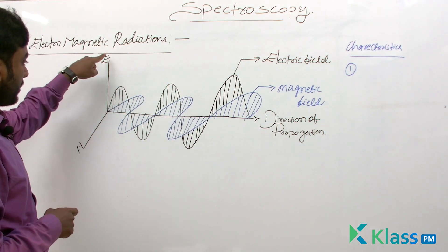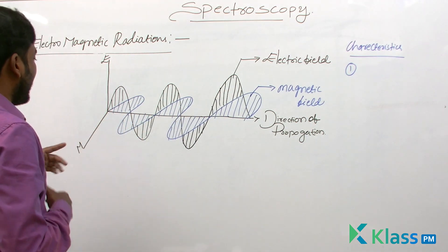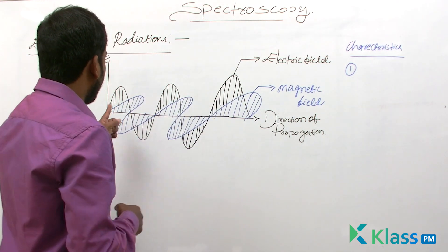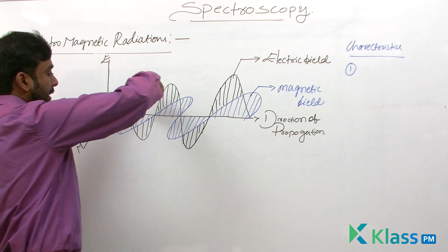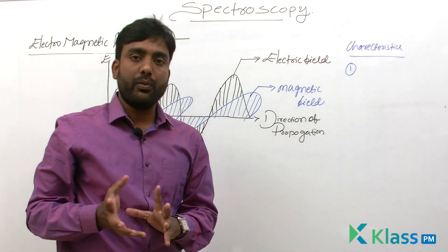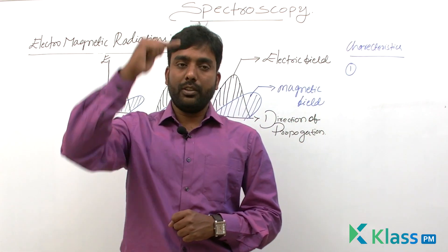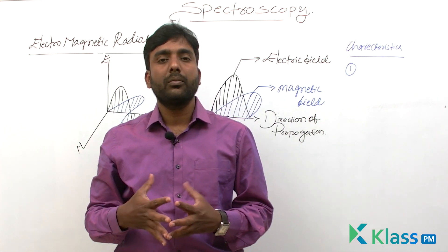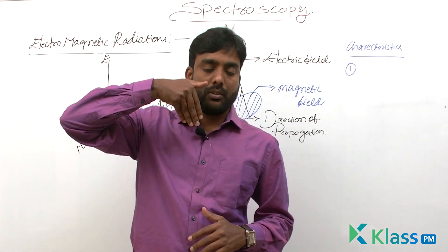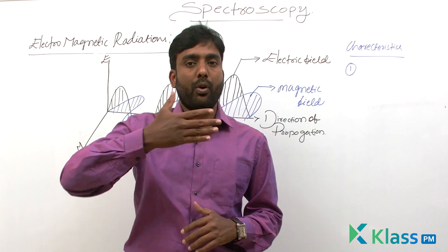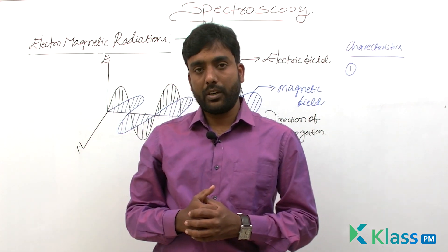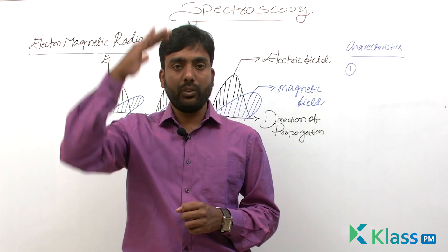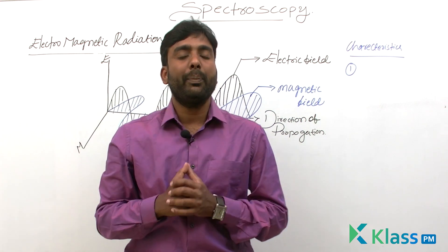Here you can see that if you think of a y-axis, x-axis, and z-axis: the black color line represents the electric field, and the blue color line making horizontal oscillations represents the magnetic field. The electric field oscillates up and down, while the magnetic field oscillates to and fro — front and back. So one is making vibrations up and down, and the other is making front and back vibrations. Both are perpendicular to each other.